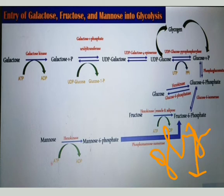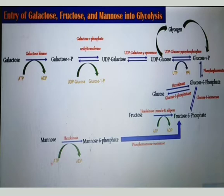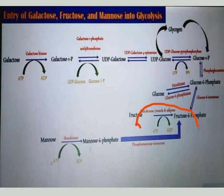If there is a short or long question in the examination about the catabolism of fructose or its conversion into pyruvate, write the whole process starting from fructose to fructose-6-phosphate, and then continue with the next whole glycolytic pathway up till pyruvate.